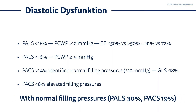Reviewing the criteria: in diastolic dysfunction, a PALS below 18% or below 16% may indicate elevated filling pressures, also in patients with preserved ejection fraction. A PACS below 8% denotes elevated filling pressures. In this case we have a PALS well above 18% and a PACS definitely above 14%. A PACS above 14% in patients with normal left ventricular function — or in this case a global longitudinal strain of minus 18 — identifies normal filling pressures. Still, we know the global longitudinal strain was reduced and the ejection fraction was normal.